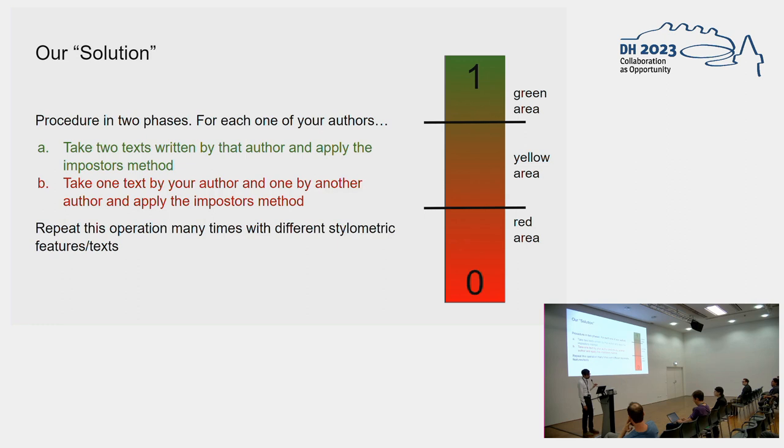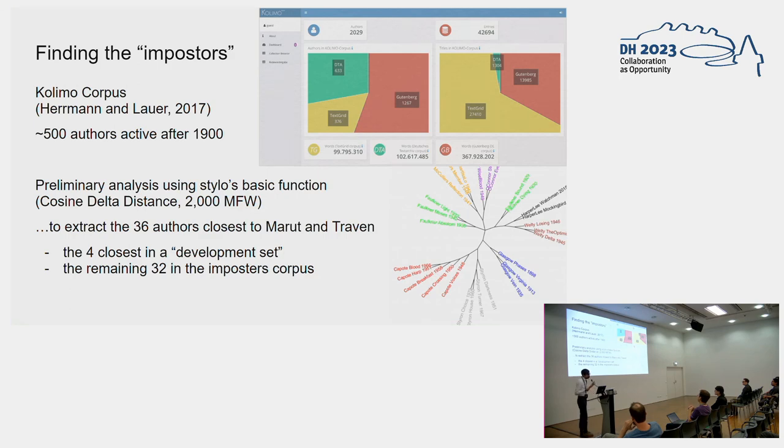That's why we propose a slightly different solution in defining these thresholds that works practically in two phases. For each one of our authors, in a first phase we try to identify our green area, our yes acceptance area, by taking two texts written by that author and applying the imposters method. We would expect a very high score. Then we take one text by this author and one text by another author and apply the imposters method again. We would expect a very low score, indicating the red area. We repeat the operation many times with different stylometric features and texts.